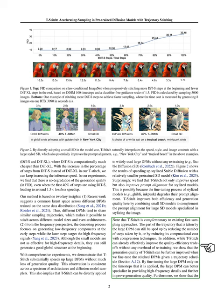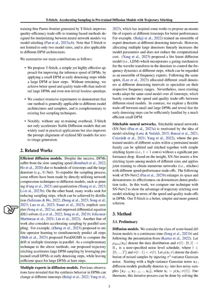We discuss the advancements and challenges in the field of efficient diffusion models, the role of multiple experts in diffusion models, and the concept of stitchable neural networks. Diffusion probabilistic models, DPMs, have shown remarkable success but are hindered by their slow sampling speed, which is due to the need for hundreds of time steps and the use of large denoisers, such as U-Net.